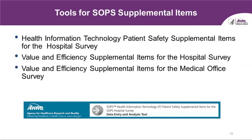In addition to the core surveys, AHRQ also offers optional supplemental item sets that can be administered at the end of the core safety culture survey. We also have data entry and analysis tools for each of these supplemental items, including the health information technology patient safety supplemental items for the hospital survey, the value and efficiency supplemental items for the hospital survey, and the value and efficiency items for the medical office survey.